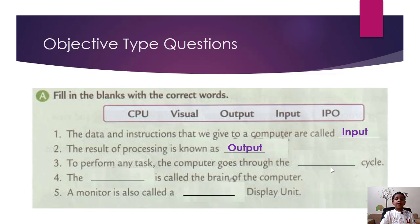Third, to perform any task, the computer goes through the dash cycle. So the answer is IPO cycle.